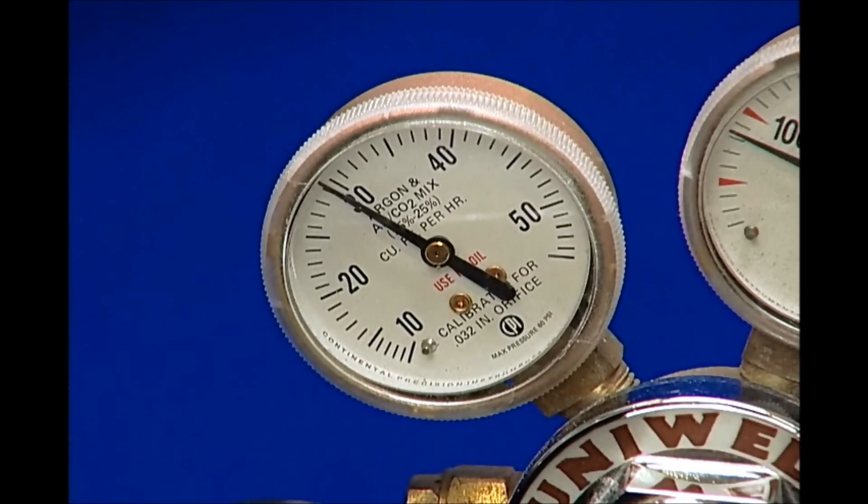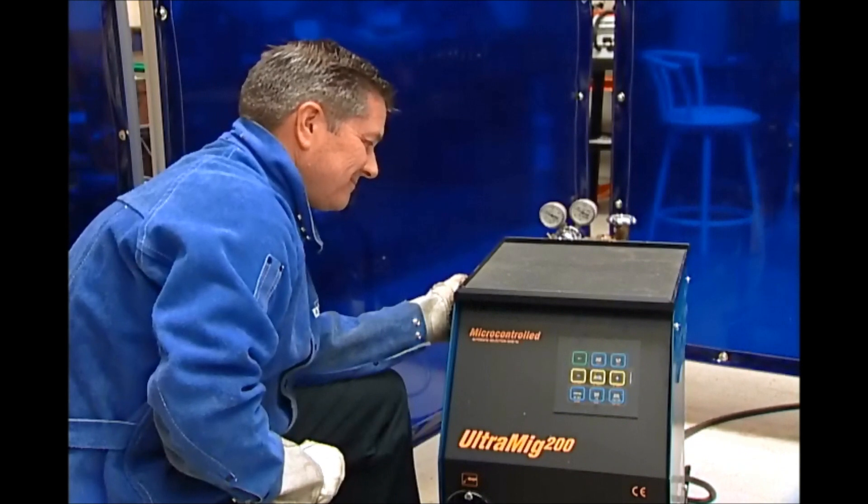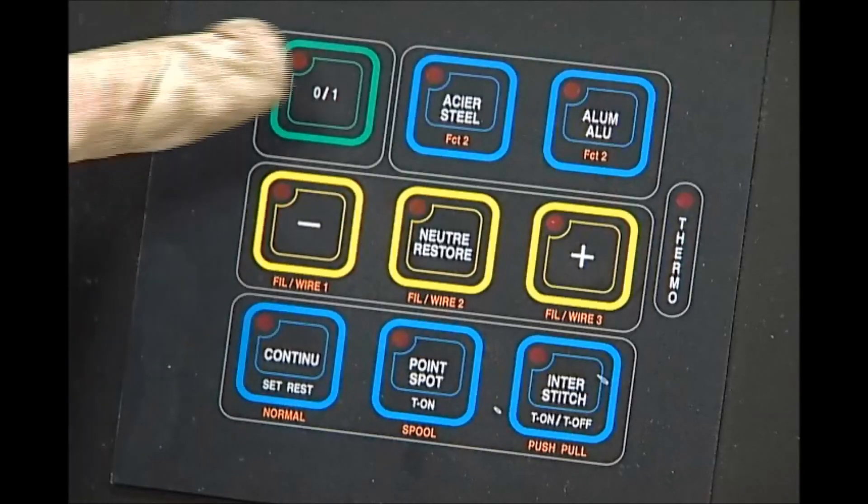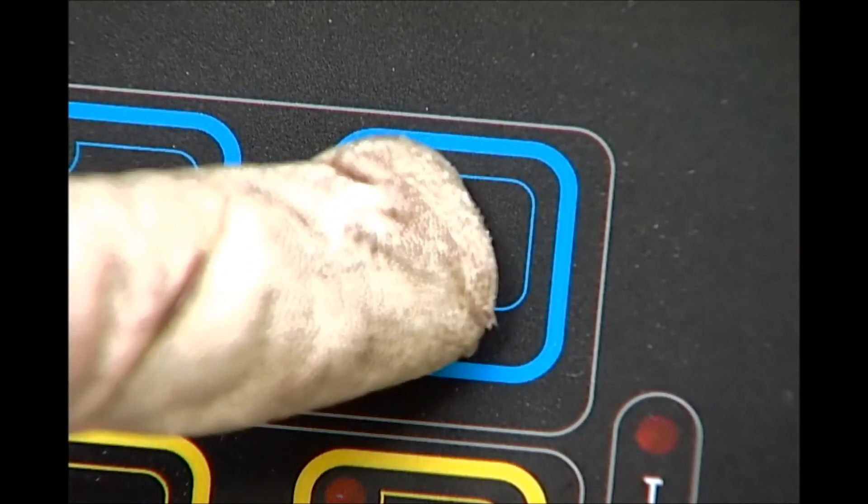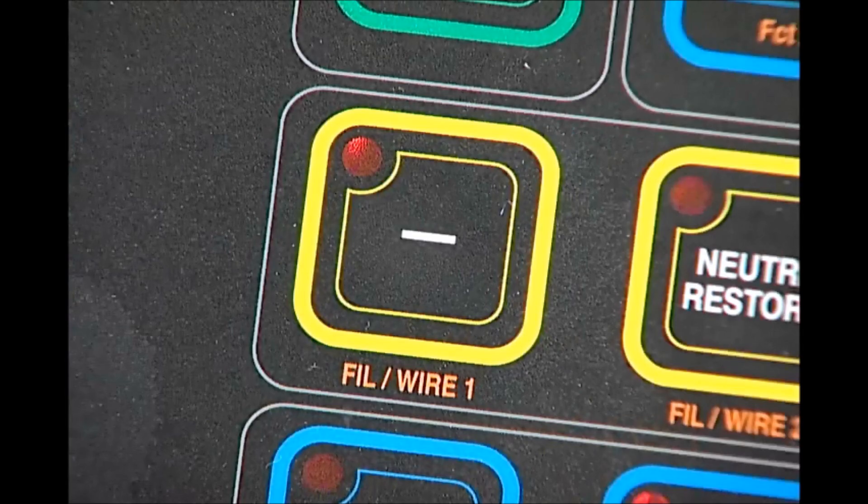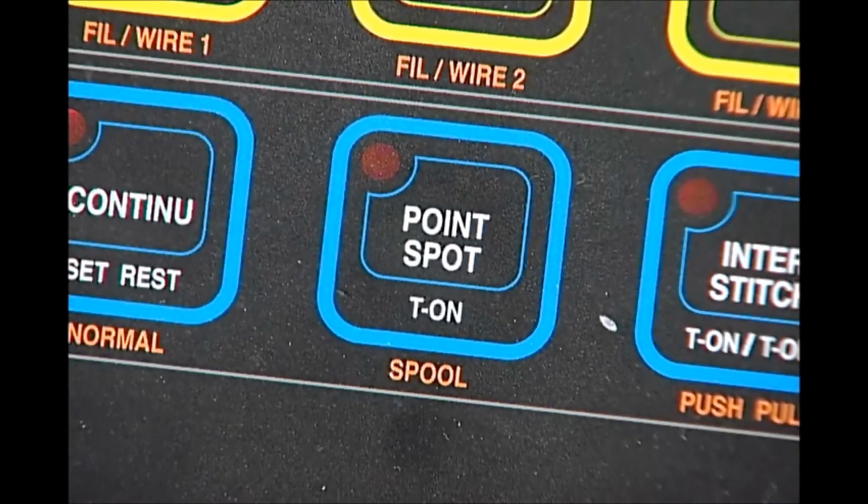The setup for spool gun welding is as follows: the welder is turned on, the type of welding is selected (aluminum), the wire is selected, then spool gun, and then the mode continuous.